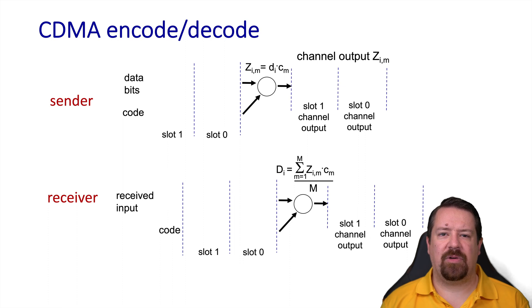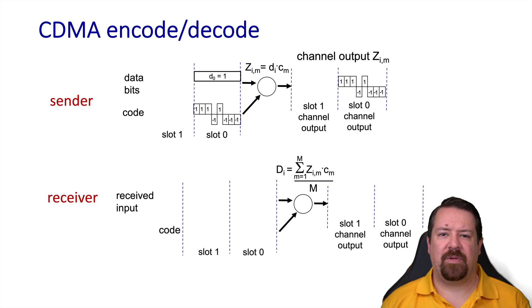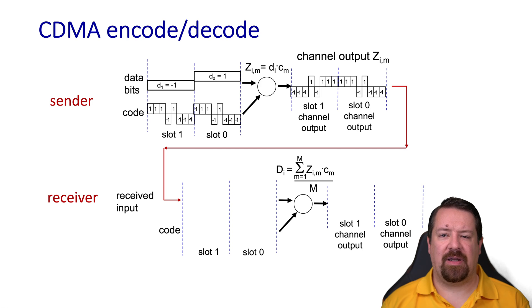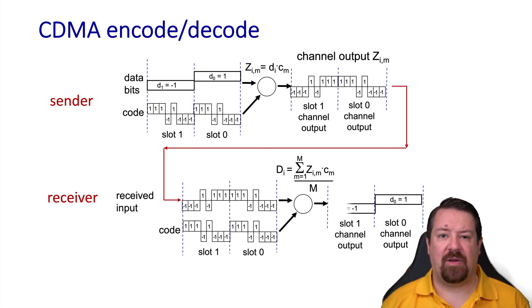In this example, we look at encoding two slots of data and then decoding it at the receiver. Each slot transmits one bit of actual data, but there is an eight-bit chipping sequence within that slot. Since the bit being transmitted in the first slot is a one, the inner product yields the chipping sequence as output. In the next slot we transmit a zero, so the inner product results in transmitting the inverse of the chipping sequence. The channel output arrives at the receiver, which knows the sender's chipping sequence and takes the summed inner product to retrieve the original data.